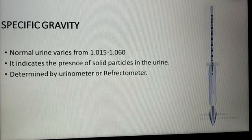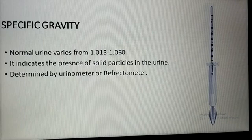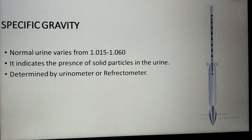The specific gravity of normal urine varies from 1.015 to 1.060. It indicates the amount of solid substances present in the urine. Specific gravity is determined by a urinometer or refractometer.